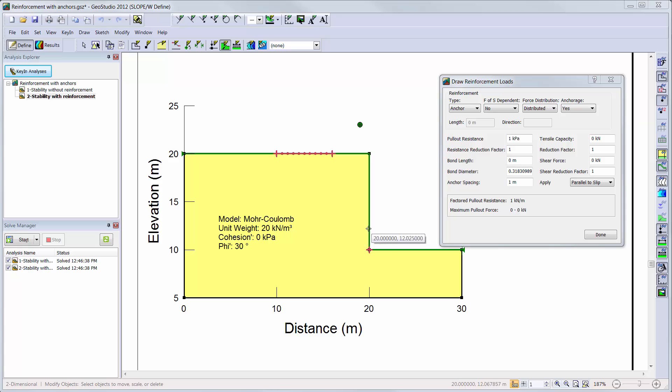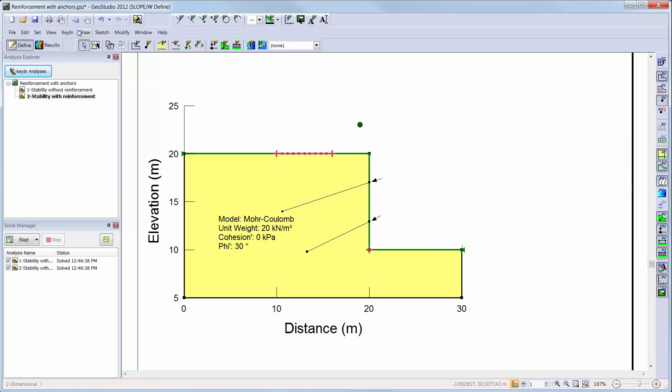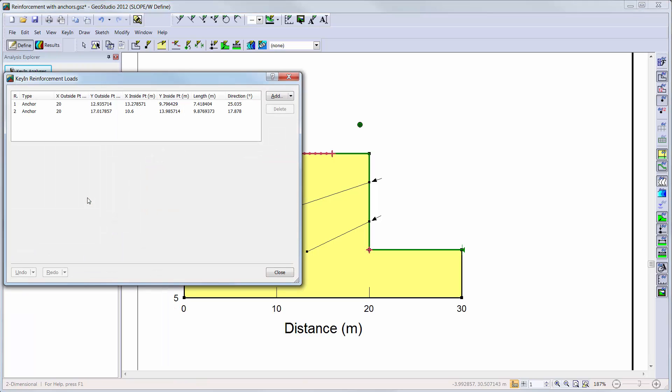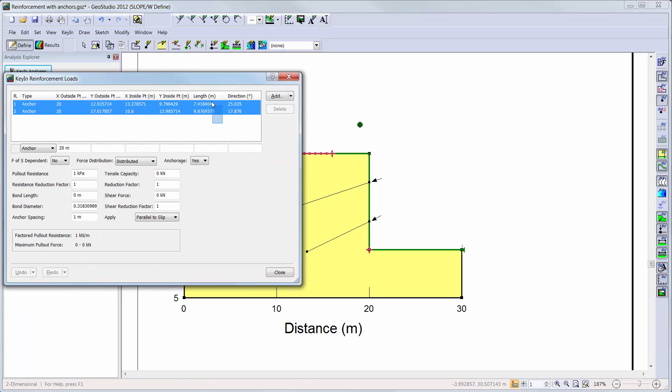Now, let's return to our analyses in Slope W and add the anchors to the slope. We will first add two anchors in the approximate location that is desired. Next, we will go to Key In, Reinforcement Loads, where we can edit the information for each or both of the anchors. When both of the anchors are highlighted in this window, the inputs can be edited for both of the anchors simultaneously.